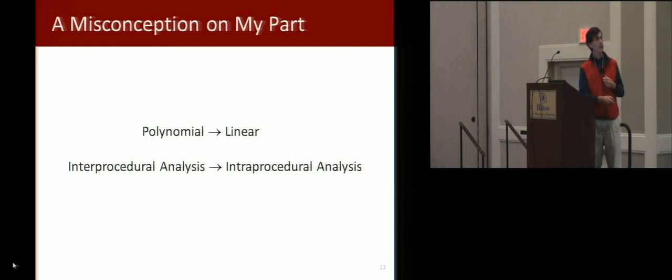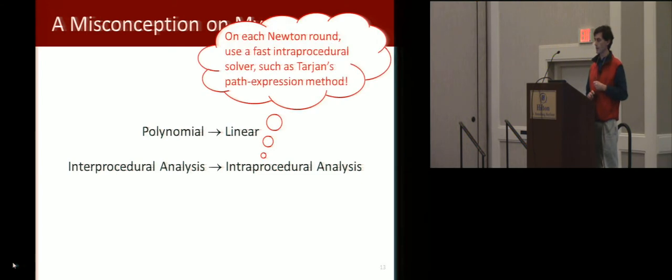And so I was thinking, polynomial to linear is like going from interprocedural analysis to intraprocedural analysis. So on each Newton round, why can't we just use a fast intraprocedural analysis such as Tarjan's path expression method?